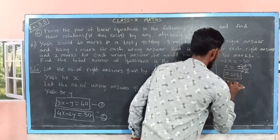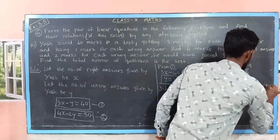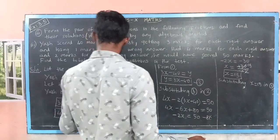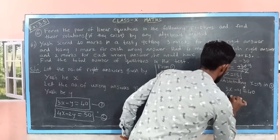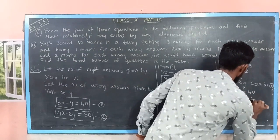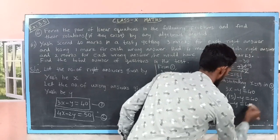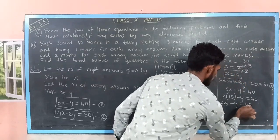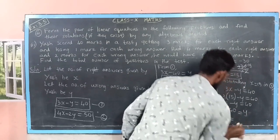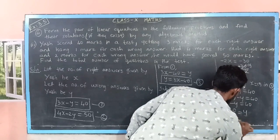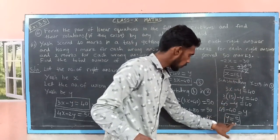Substituting x equals 15 into equation 1: 3 into 15 minus y equals 40. So 45 minus y equals 40. Taking y to the right side and 40 to the left side gives y equals 45 minus 40, which is 5. Thus we have obtained x equals 15 and y equals 5.